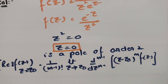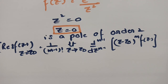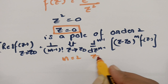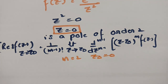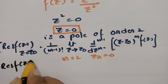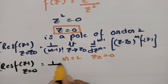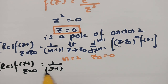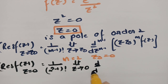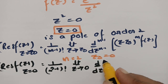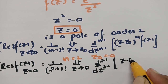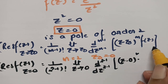In this formula, m is the order of the pole, so m = 2, and z₀ = 0. Substituting, the residue of f(z) at z = 0 equals 1 over (2−1)! times the limit as z tends to 0 of the first derivative of (z − 0)² times f(z).